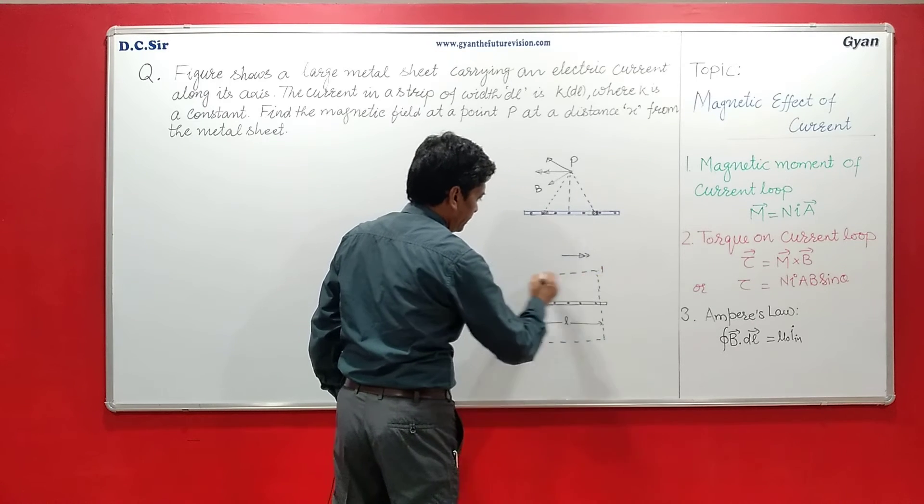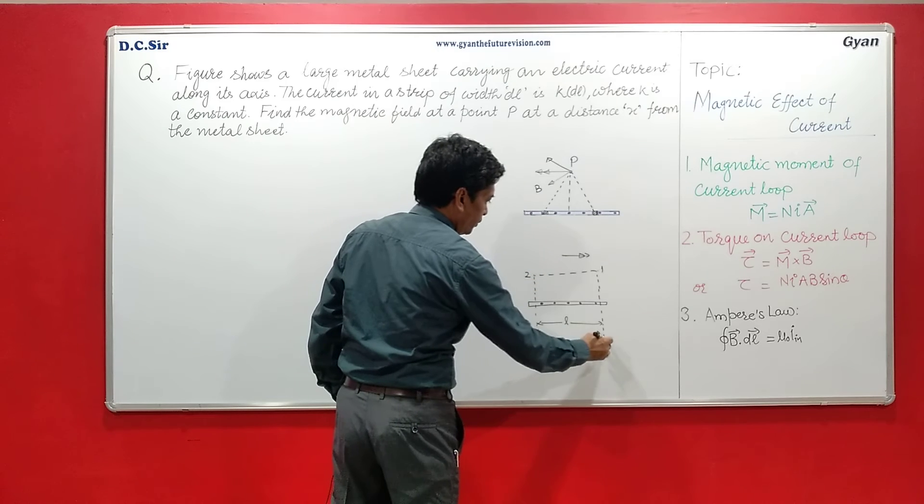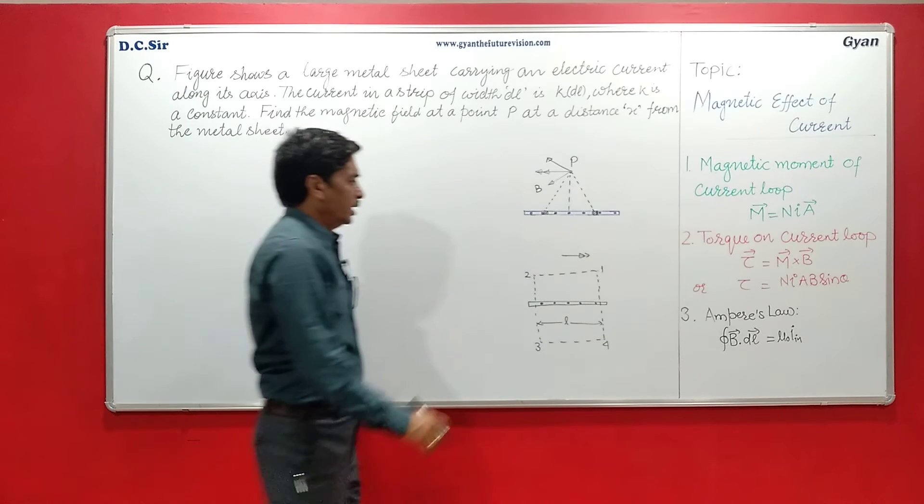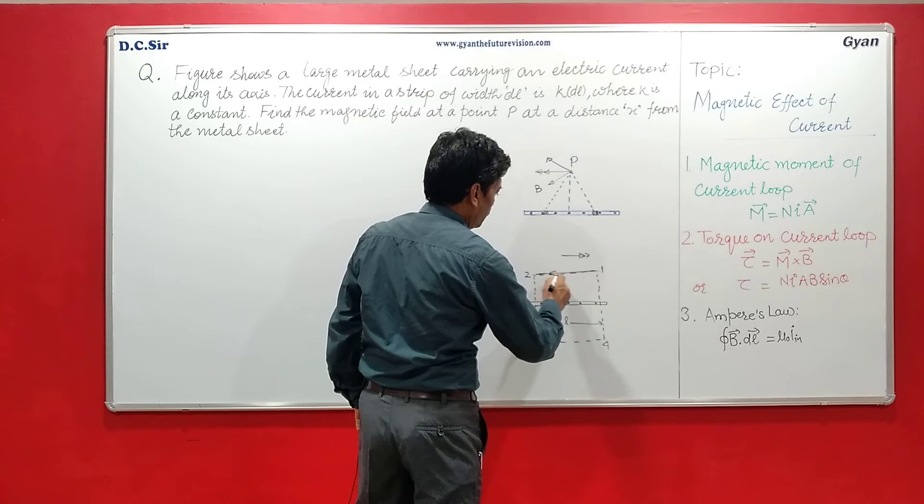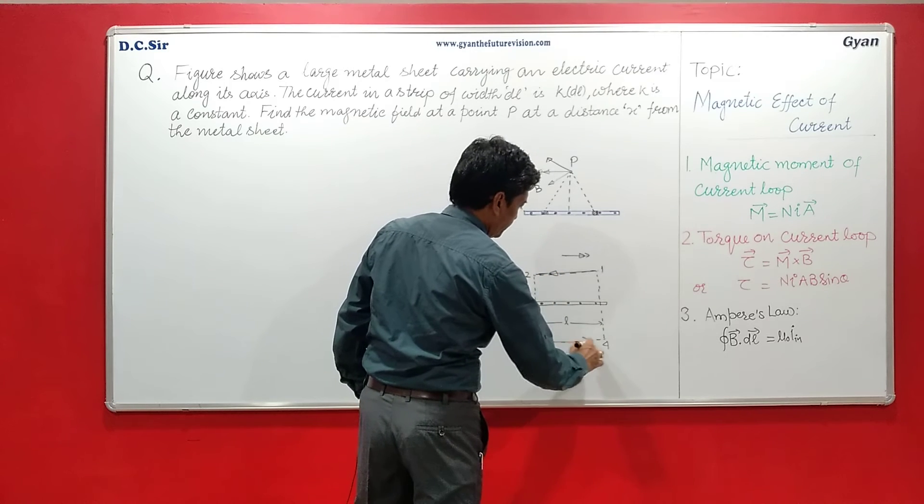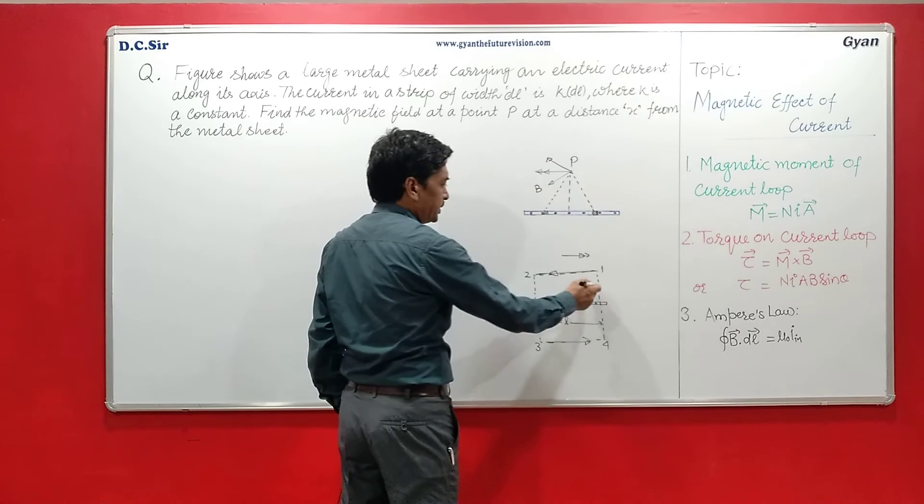Choose the closed loop, this could be 1, 2, 3 and 4 to apply the Ampere's law, and the magnetic field from 1 to 2 and similarly from 3 to 4, and this distance is X.